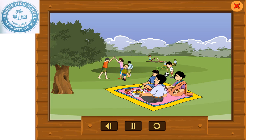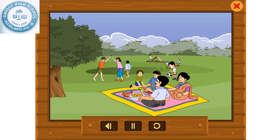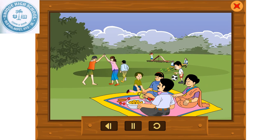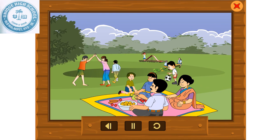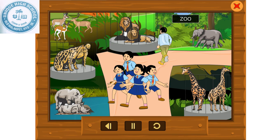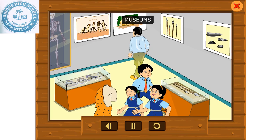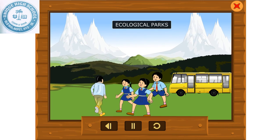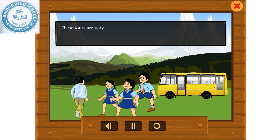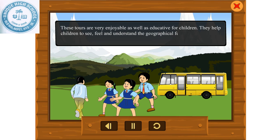Sometimes we go out for picnics. There we play and eat together and have fun with our family and friends. Sometimes our school takes us to places like zoos, museums, ecological parks, etc. These tours are very enjoyable as well as educative for children. They help children to see, feel and understand the geographical features, cultures, languages and lifestyles of people of different places.